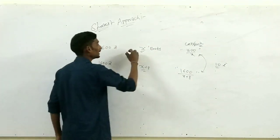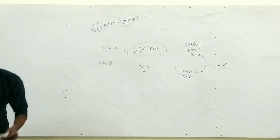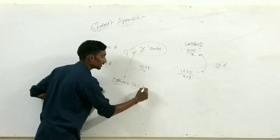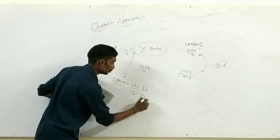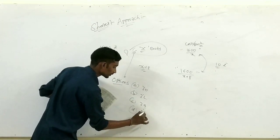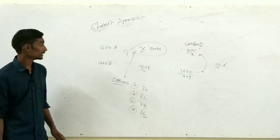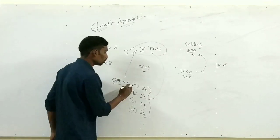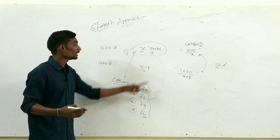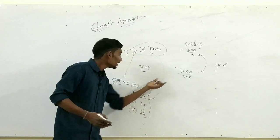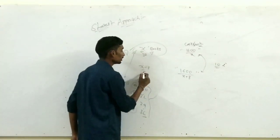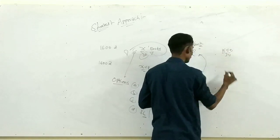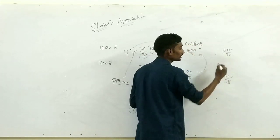Number of books के options हैं: A=30, B=32, C=34, D=36। ये options उसके द्वारा खरीदी गई books की संख्या denote करते हैं। Option A से start करते हैं — x=30 लेने पर x+8=38। Check करो: 1600/30 − 1600/38 = 10 होना चाहिए।